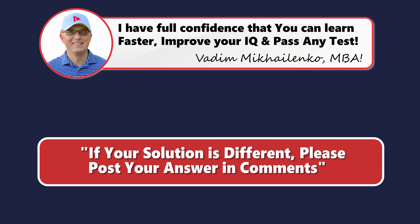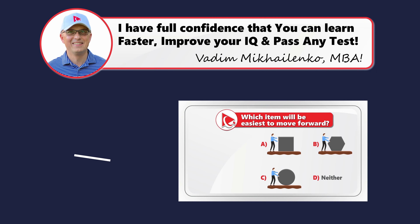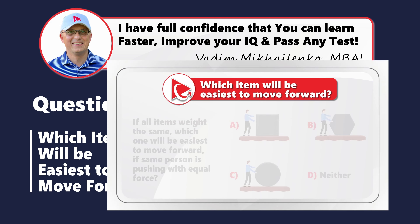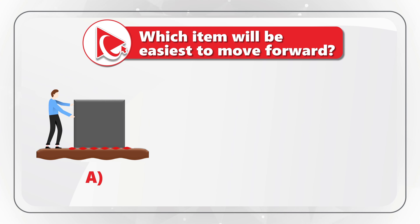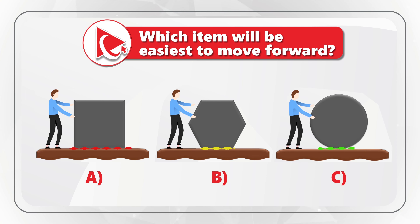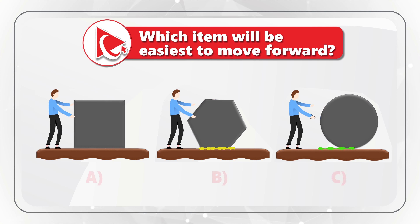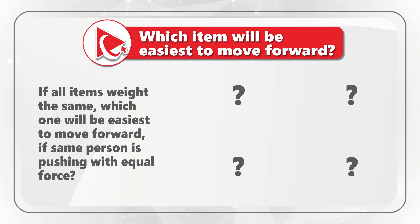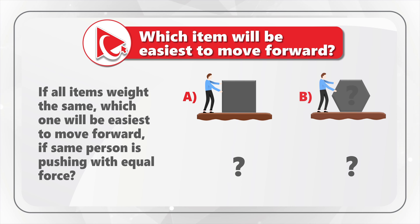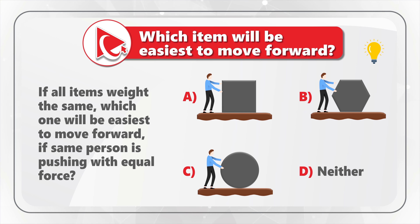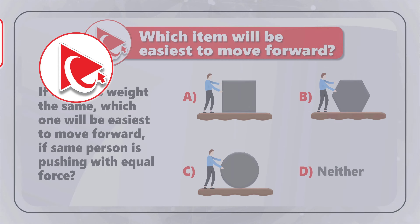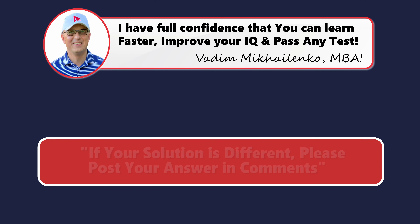Now I have a practice question for you. We have three different scenarios of a person moving an object, choices A, B, and C. If all items weigh the same, which object would be easiest to move forward if the same person is pushing with equal force? You need to select one out of four possible choices: A, B, C, or Choice D, neither one. When you solve this challenge, please post your answer in comments so I can give you feedback.